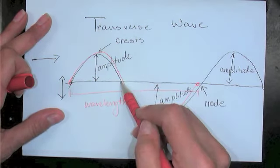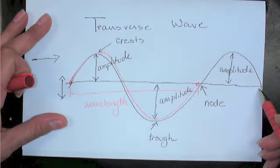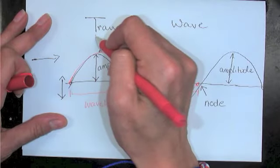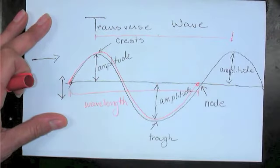Or we could have started measuring at this node and gone down and up and down, and those should all be equal. We can also measure the wavelength from crest to crest or trough to trough.